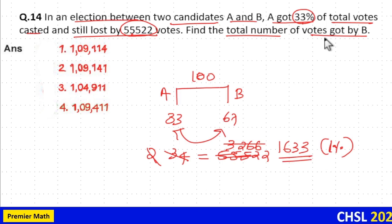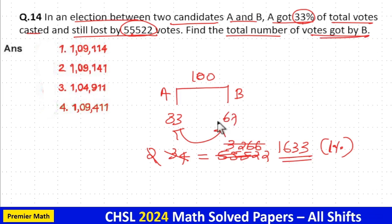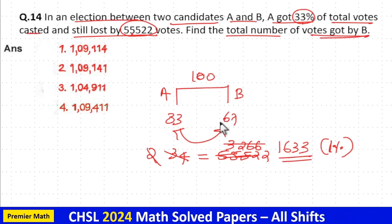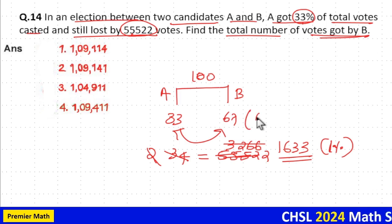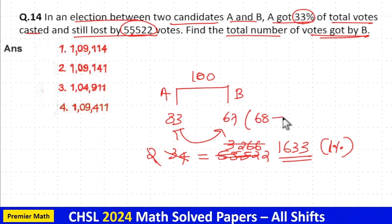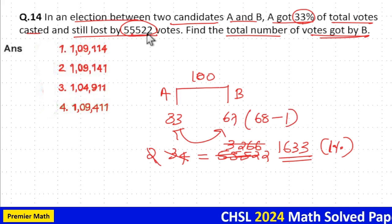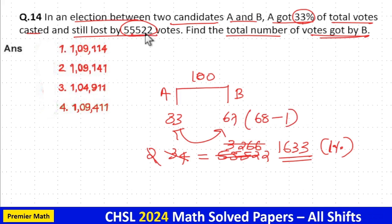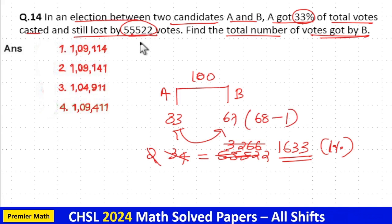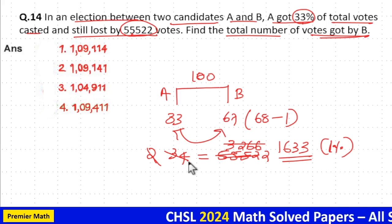Now, what was scored by B is equal to 67%. To find this, note that if we take double of 34%, that gives us 68%. So double of 55,522 will equal 68%.